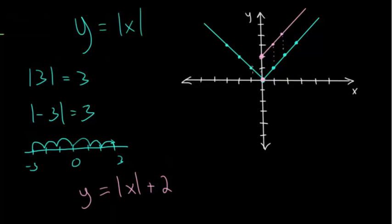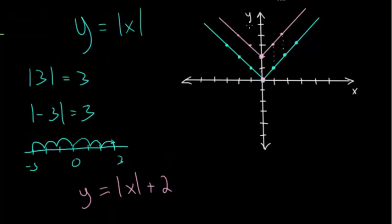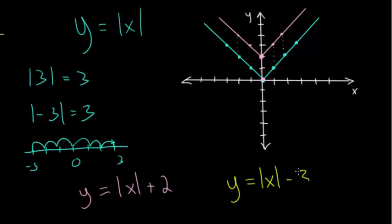Likewise, for the negative values: when you plug in negative one, you get one plus two, which is three. When you plug in negative two, you get two plus two, which is four. So again, you get this line where everything compared to the parent function was just shifted up two units. To shift something up or down, we're going to add or subtract on the outside. If we have y equals the absolute value of x minus three, all of the y values are going to be three less.